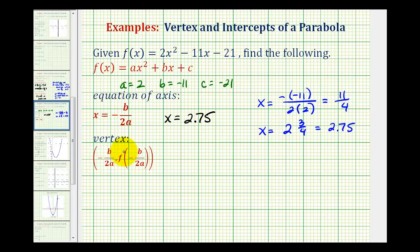And then to find the vertex, we know that the x coordinate has to be 2.75, because the vertex is on the axis of symmetry. And then we need to find the function value when x equals 2.75. So we need to find f of 2.75, which is going to be 2 times 2.75 squared, minus 11 times 2.75, minus 21.